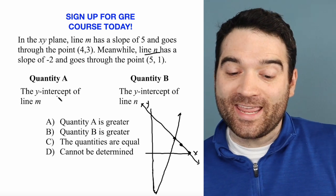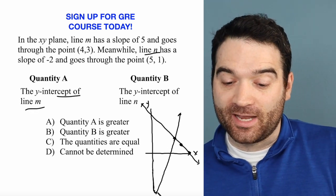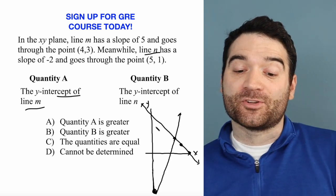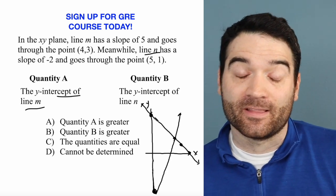We want to know what's greater: the y-intercept of M, the first line. Well, the y-intercept of M is going to be way down here, some negative number. Or the y-intercept of N, way up here. That's going to be a positive number.